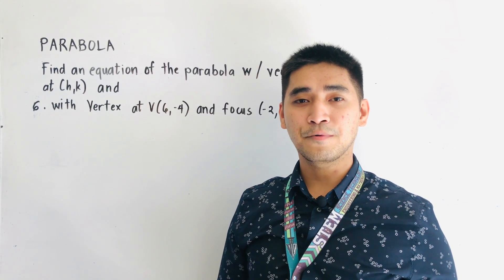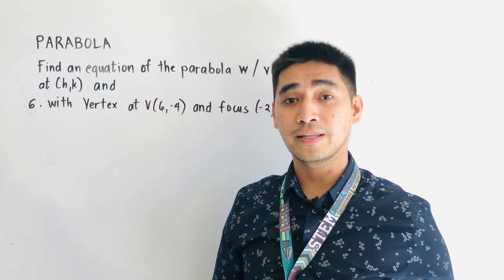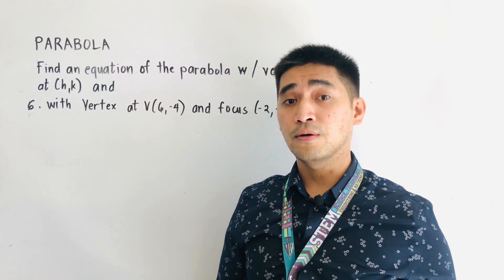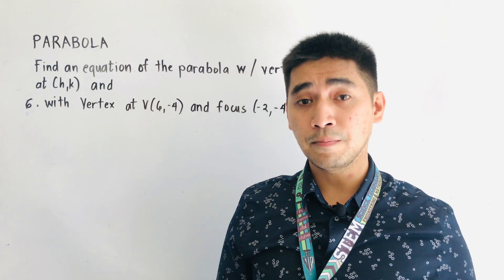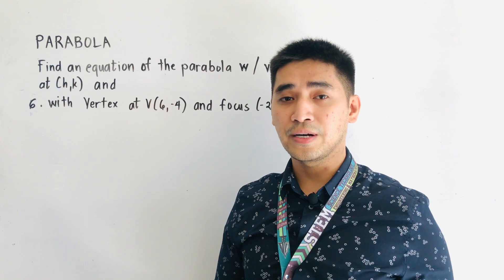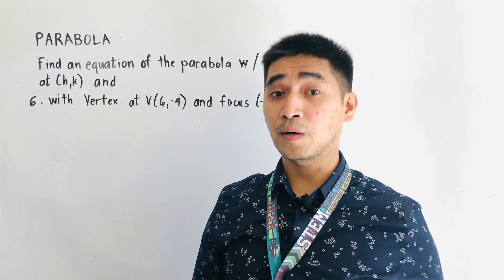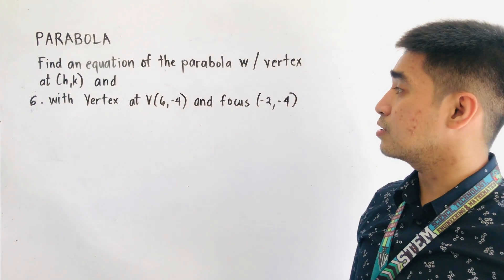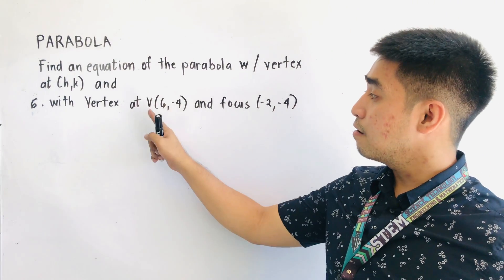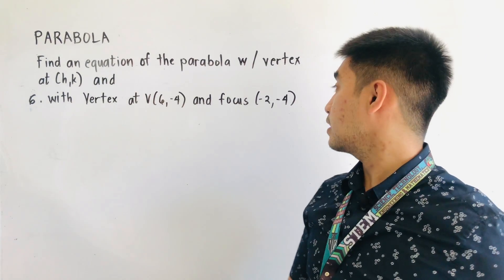Last time, we were able to discuss the standard equation of the parabola with vertex located at (H, K) and not anymore at the origin. We're also done discussing a problem regarding the standard equation of the parabola involving its directrix and the focus. For today, we have another set of problems and we're asked to find an equation of the parabola with vertex located at (6, -4) and focus (-2, -4).